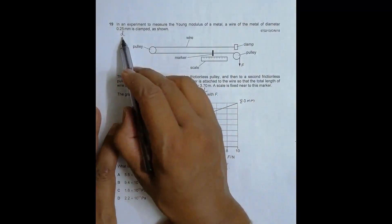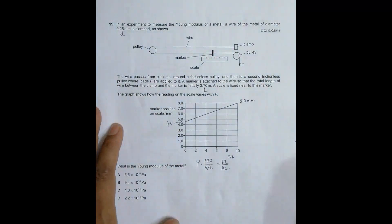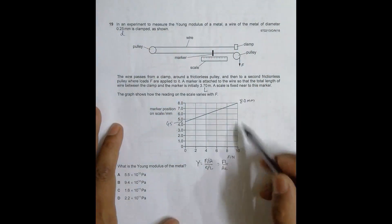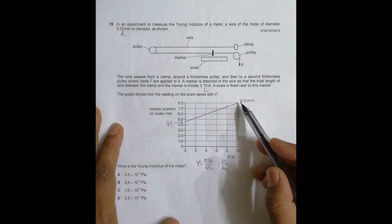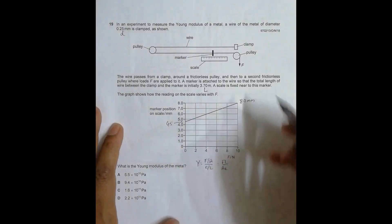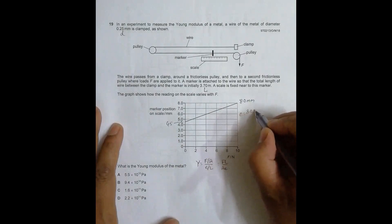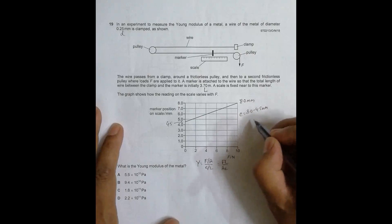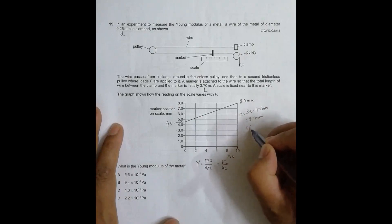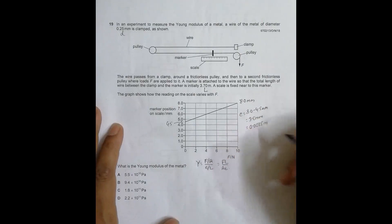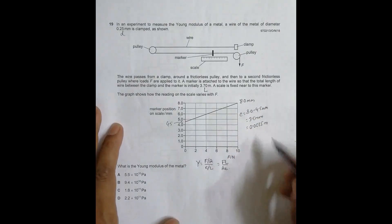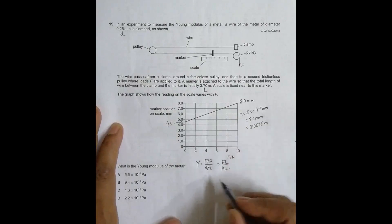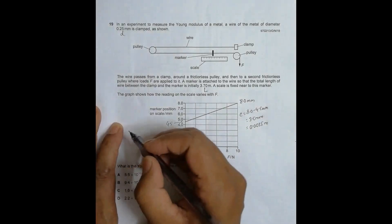We have the diameter of the wire, so we can find the cross-sectional area A. For the extension: when we apply 10 Newtons, the marker reads 8.0 mm; initially it showed 4.5 mm. So the extension equals 8.0 minus 4.5 millimeters, which equals 3.5 millimeters, or 0.0035 meters in SI units.